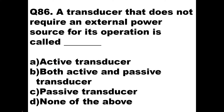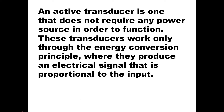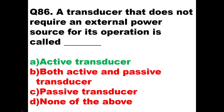Question number 86. A transducer that does not require an external power source for its operation is called as? The transducer which does not require external power is called as active transducer. A transducer which requires an external power is called as passive transducer. Since this statement says it does not require an external power source, the answer is active transducer — option A. An active transducer does not require any power source in order to function; these transducers work through the energy conversion principle, producing an electrical signal proportional to the input. So option A is the right answer.